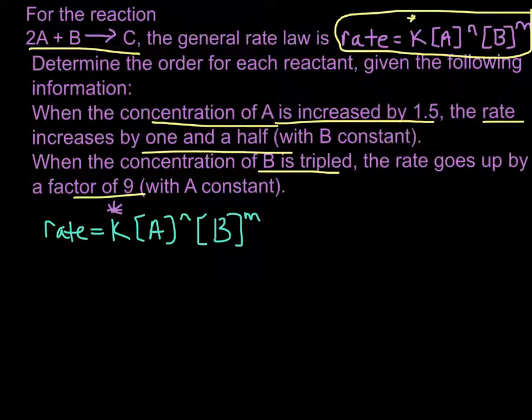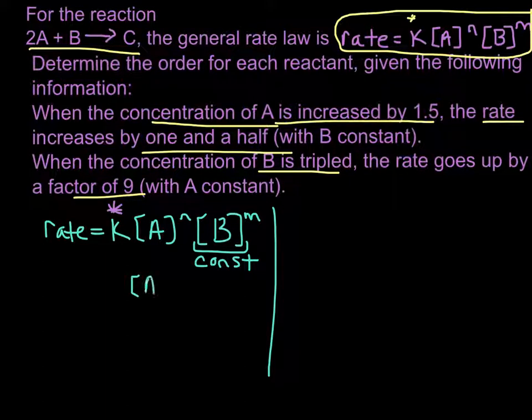So let's look at changing the concentration of A first. So basically all we need to worry about is, since B is constant and we're changing the concentration of A, we really only need to worry about A to the n power is proportional to the rate. So that's what we're going to work with to figure out this order.